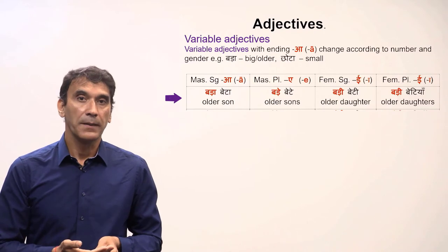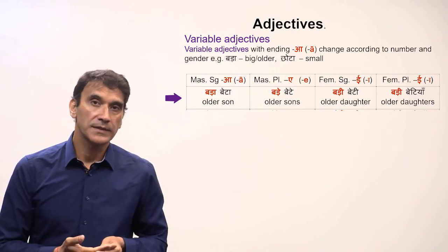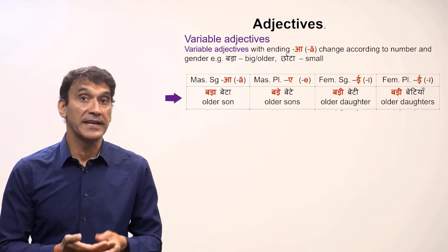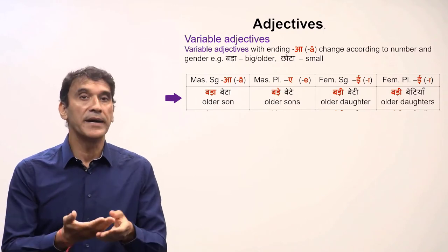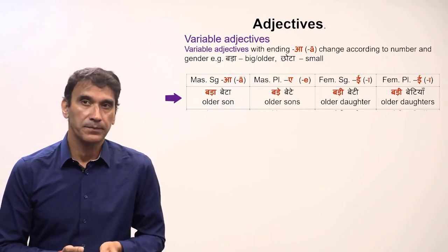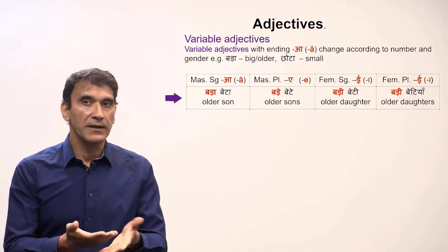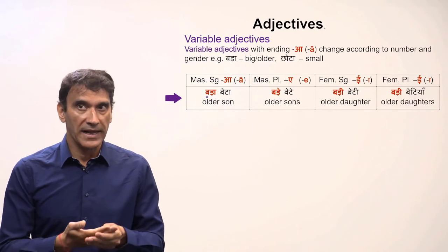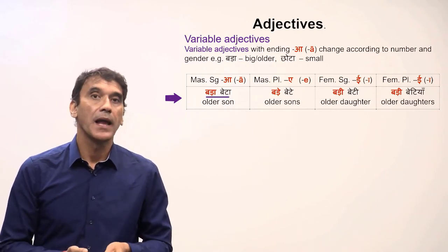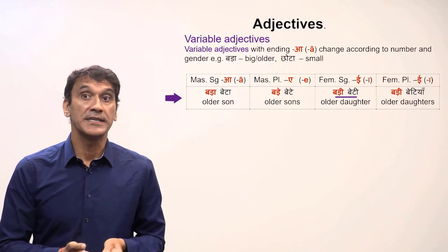'Bada' means old or older. The adjective 'bada' becomes 'bade' in masculine plural and 'badi' in feminine singular and plural. Let's take the adjective 'bada' with nouns: 'bada beta' (older son), 'bade bete' (older sons), 'badi beti' (older daughter), and 'badi betiyan' (older daughters).